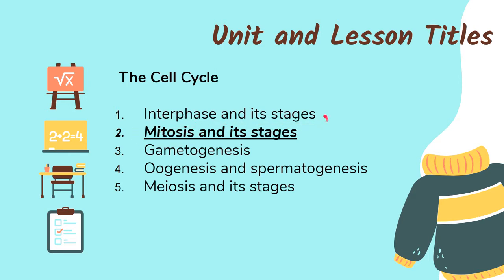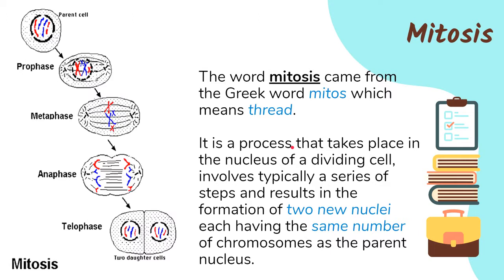The word mitosis was actually derived from the Greek word 'mitos,' which means thread. That refers to the different spindle fibers that are very noticeable during mitosis. So mitosis is a process that takes place in the nucleus of a dividing cell.